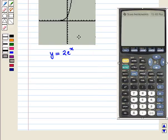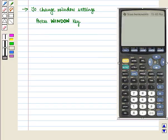To get a better view of this graph, we can change the window settings. To change window settings, we press the WINDOW key.